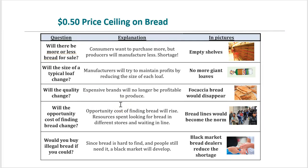The lower price increases quantity demanded and decreases quantity supplied, so we get a shortage. The size of the loaf of bread gets smaller so that the firm can maintain some profits. Quality of bread goes down as firms use cheaper ingredients. The opportunity cost of finding bread will be higher than the market price — once you include the opportunity cost of waiting in line, the full cost to the consumer will be more than the market price. As a result, an illegal bread black market may form.